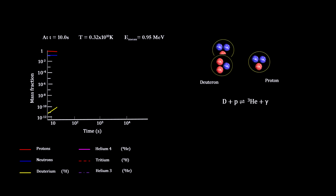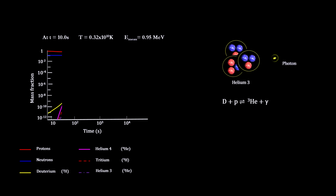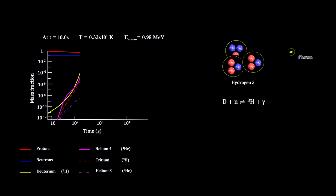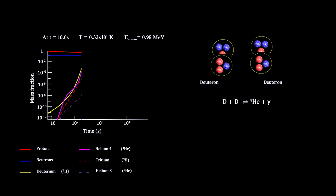As the deuterium density climbed, significant amounts of helium and hydrogen isotopes were formed along with lots of tightly bound hydrogen. This diagram illustrates the various nuclear interactions along the way.